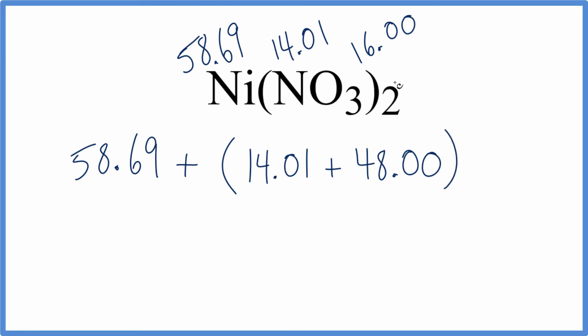Close our parentheses, and then we're going to multiply by 2. So we're going to take 14.01 plus 48.00, add them together, and then multiply by 2, and then we'll add it to the 58.69.